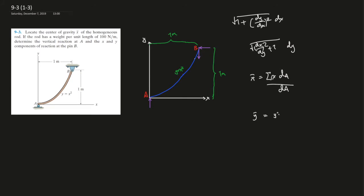So if we're finding y-bar, it would be y times square root of 1 plus dx over dy. We want to use this one because everything is in terms of dy. And x equals square root of y.